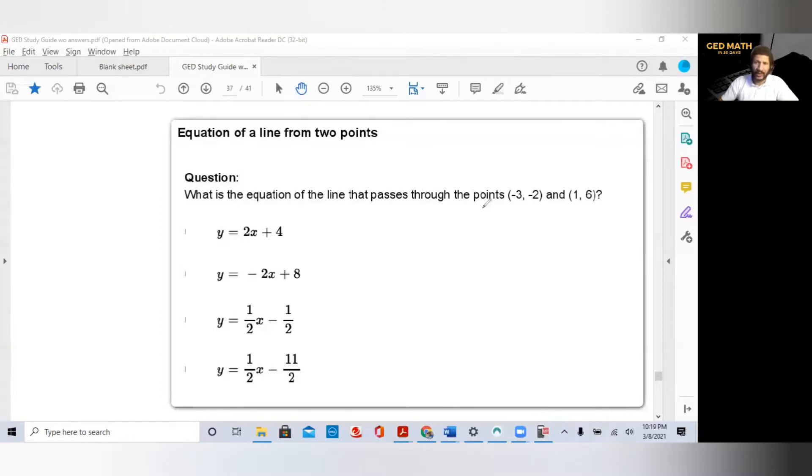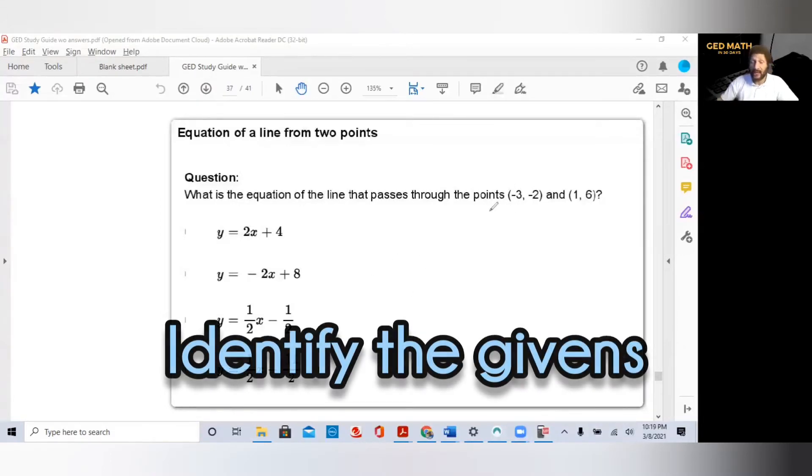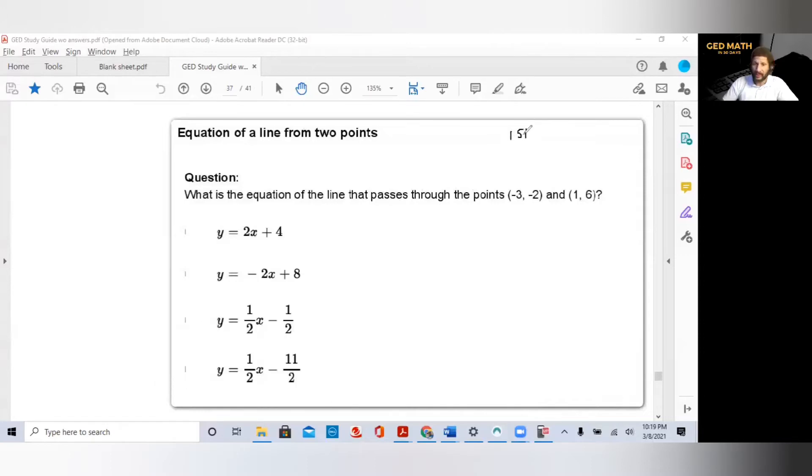First of all, what you have to recognize is what's given. They are giving you two points. This is your first point, this is your second point. Each point has an ordered pair. They give you an X value and a Y. Because this is the first point, I'm going to call this X1, I'm going to call this Y1. Since this is the second point, I'm calling this X2 and Y2.